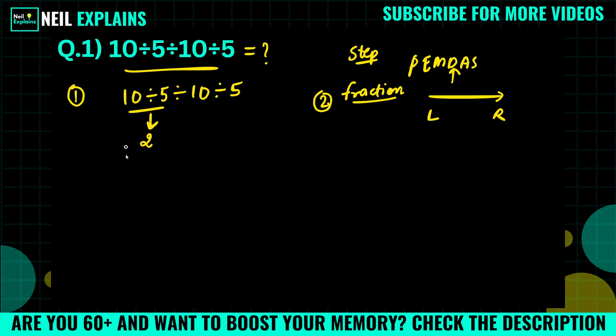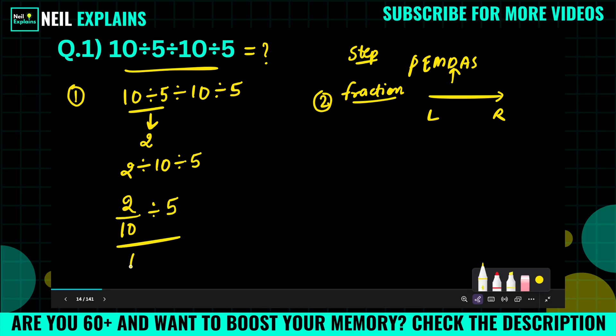So we will write again 2 divided by 10 divided by 5, and again we can write 2 divided by 10 as 2 by 10 divided by 5.